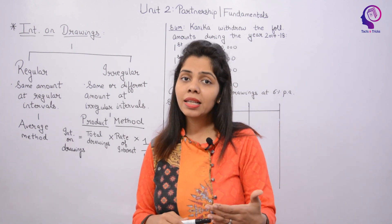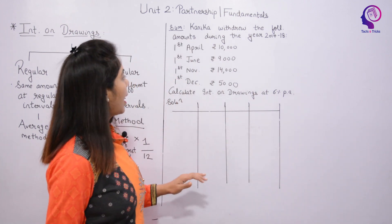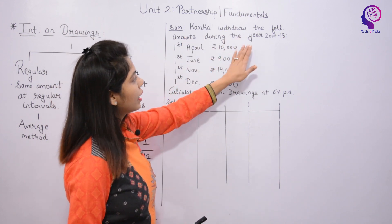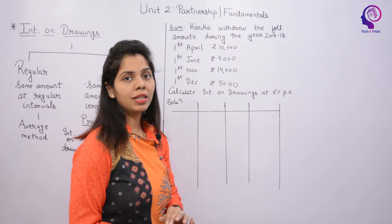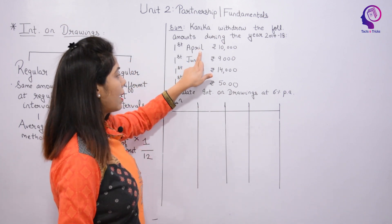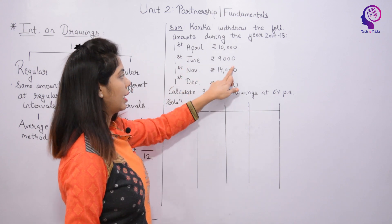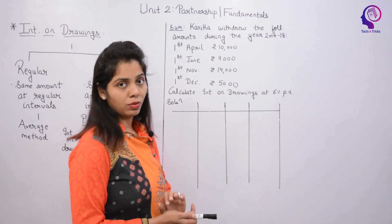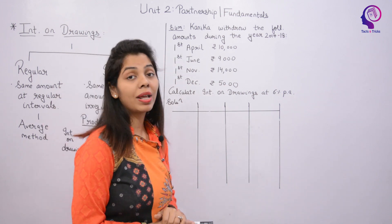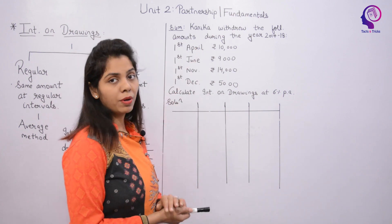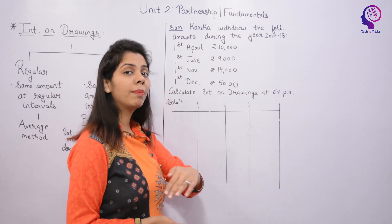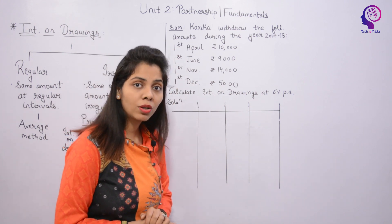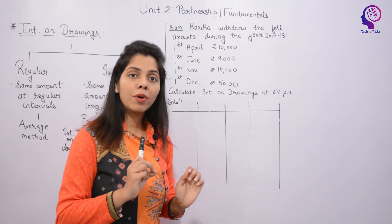Let us understand this with an example. The question: Can withdraws the following amounts during the year 2017–2018 — 1st April: 10,000; 1st June: 9,000; 1st November: 14,000; 1st December: 5,000. These withdrawals are at irregular intervals — April, June, November, December — so this is Irregular Drawings, and we use the Product Method.